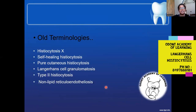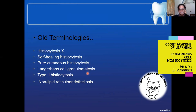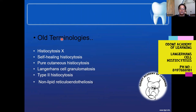In older times this condition was named as histiocytosis X, self-healing histiocytosis, pure cutaneous histiocytosis, Langerhans cell granulomatosis, type 2 histiocytosis, and non-lipid reticuloendotheliosis. Currently it is called Langerhans cell histiocytosis.